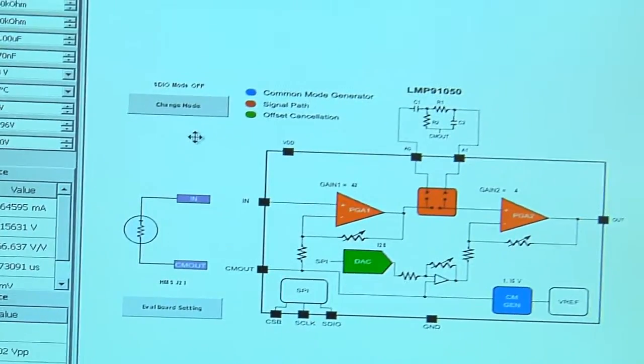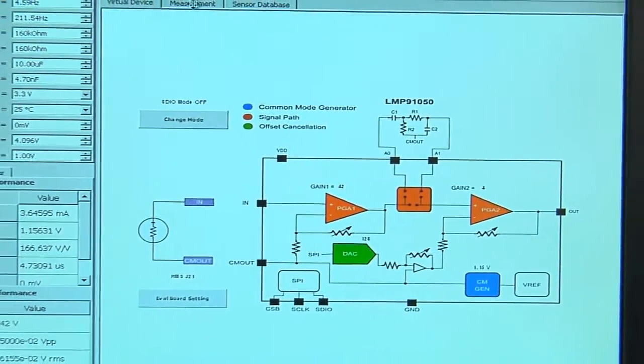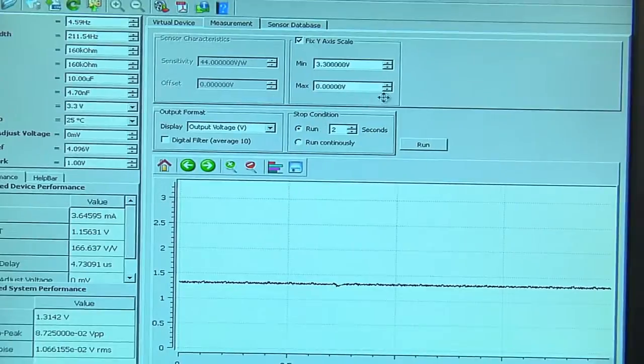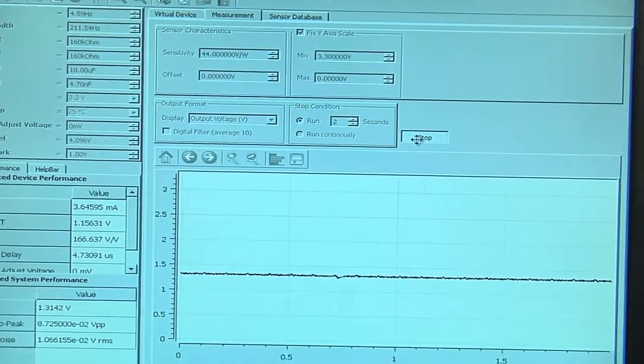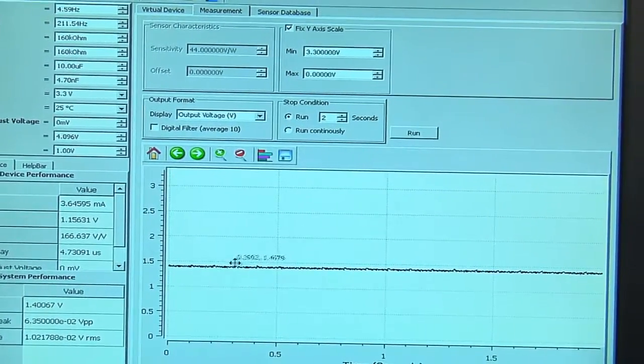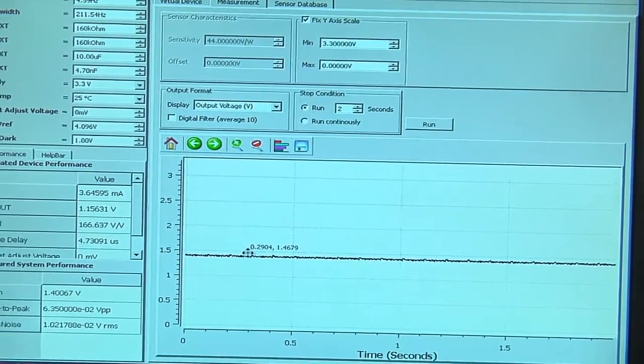To take a measurement, go to the measurement tab, and click run. Here, we see our output is at about 1.5 volts.